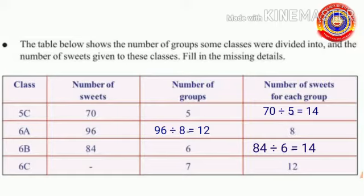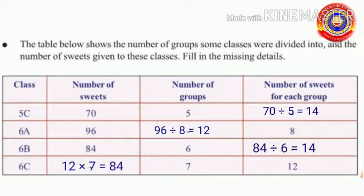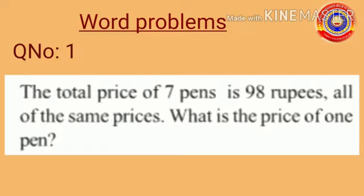In class 6C, the number of sweets is not given. The number of groups = 7 and the number of sweets for each group = 12. So the total number of sweets = 7 × 12 = 84. Is that clear?